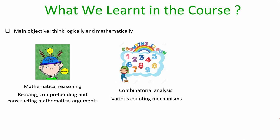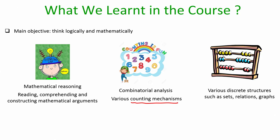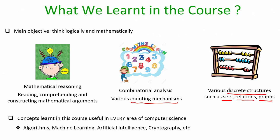We have seen various advanced counting mechanisms, like counting by formulating recurrence equations and solving them. We have also seen various discrete structures like sets, relations, and we have touched upon basic concepts from graph theory.